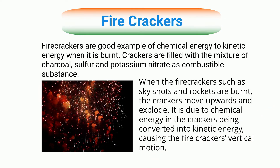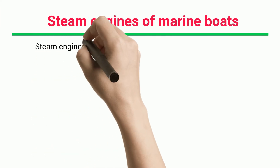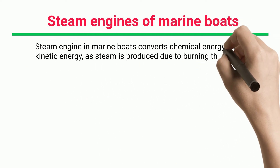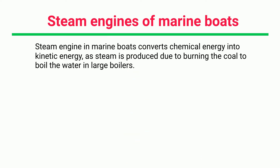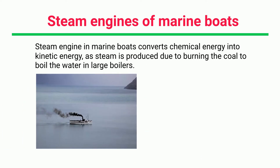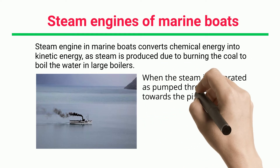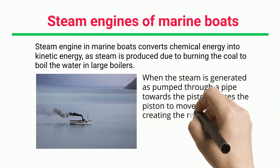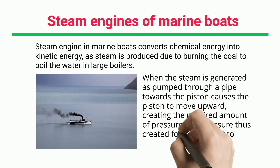Steam Engines of Marine Boats. The steam engine in marine boats converts chemical energy into kinetic energy as steam is produced by burning coal to boil the water in large boilers. When the steam is generated and pumped through a pipe towards the piston, it causes the piston to move upward, creating the required amount of pressure. The pressure thus created forces the boat to move.